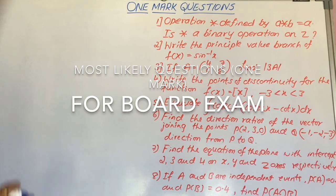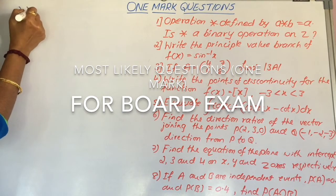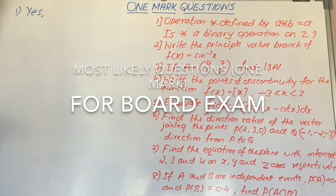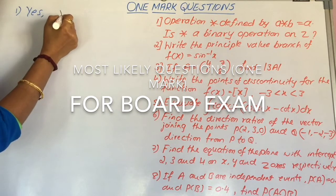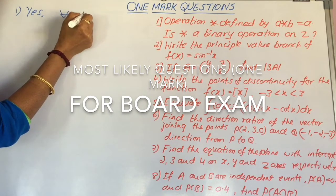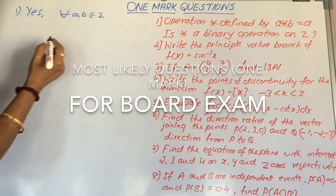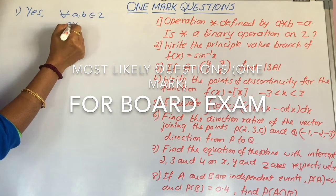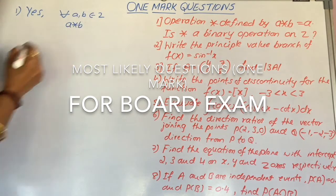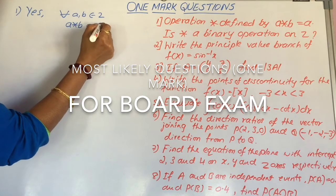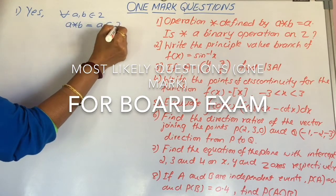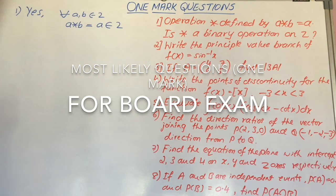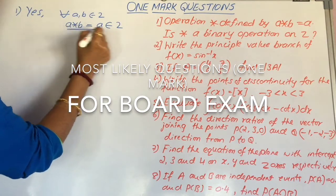Let us consider the answer. Yes, it is a binary operation because for all a, b belong to z, the defined binary operation a star b which is equal to a also belong to z. Therefore, star is a binary operation.